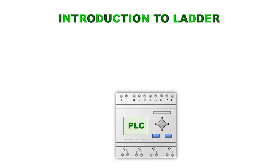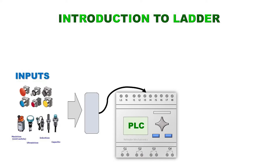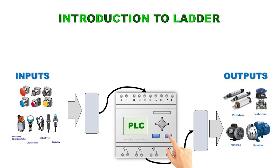In a PLC — programmable logic controller — in general, the physical elements that are the external inputs are connected from the top; these can be connected directly or through an expander or converter module if necessary. The external outputs are connected through the bottom of the PLC; these can be connected directly to the physical elements or through modules or security keys.